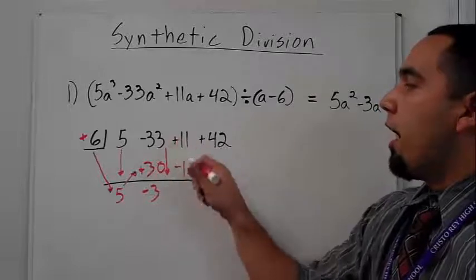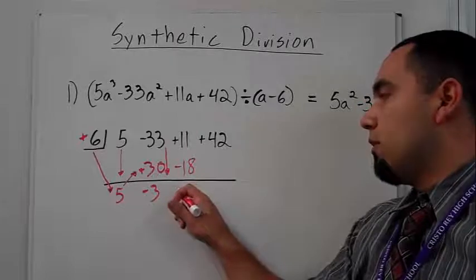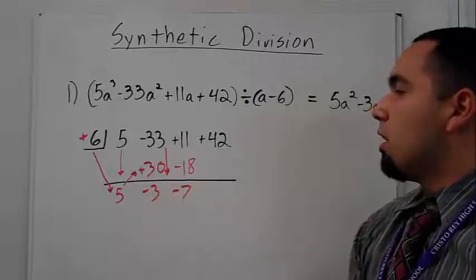That gives me negative 18. And again, I add when I go down. So 11 minus 18, or plus negative 18 is what I should say. That would be negative seven.